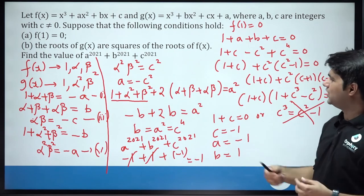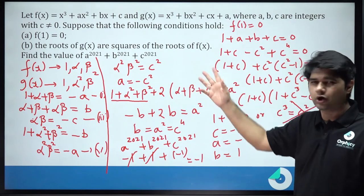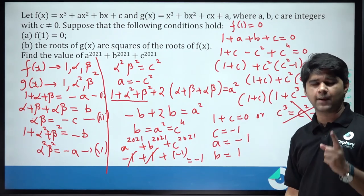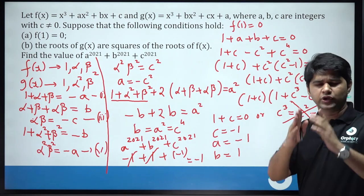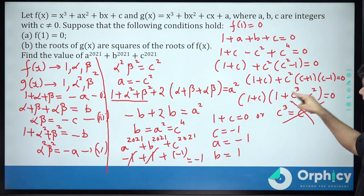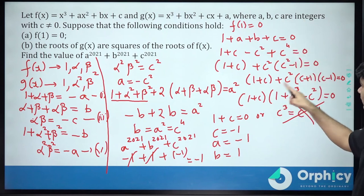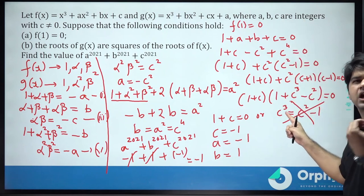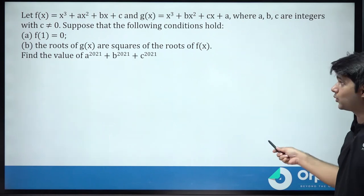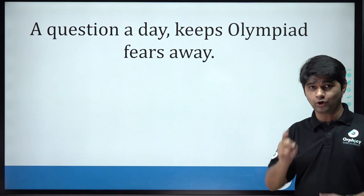This is a question that requires you to think a lot, find a lot of relationships, and in every good olympiad problem you have to make a key remark — here recognizing that c³ = c²−1 has no integer solution. A question a day keeps olympiad fears away. See you tomorrow, bye bye!